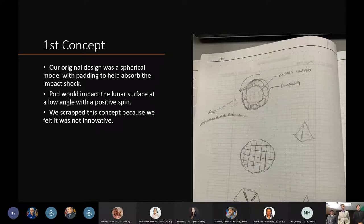Our first concept was a basic spherical design with padding on the inside and outside to absorb impact. We planned on launching it at a low angle with positive spin to help absorb the impact. We scrapped this spherical design because a major weakness was that if the pod breached, there would be issues.